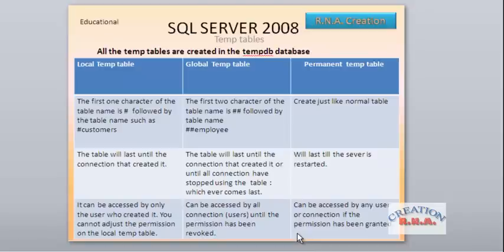The local temp table will exist until the connection that created it is active. Once that connection is disconnected or the user logs out, that temp table will get deleted from the tempdb. The global temp table will be lost when the connection that created it ends, or until all connections have stopped using the table, whichever comes last. The permanent temp table will be there until the server is restarted or rebooted.